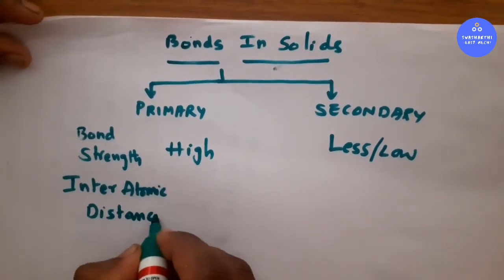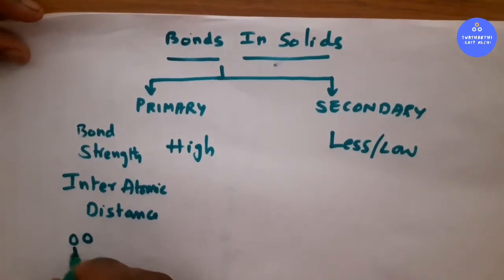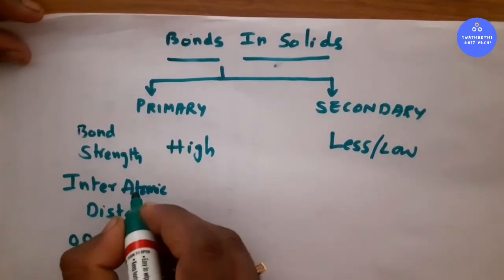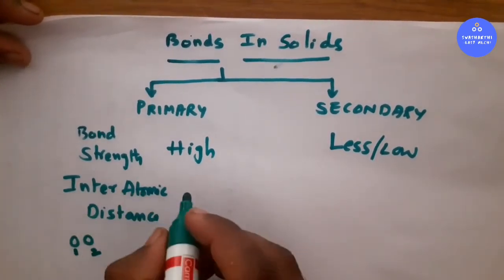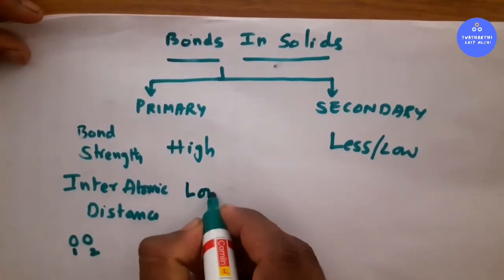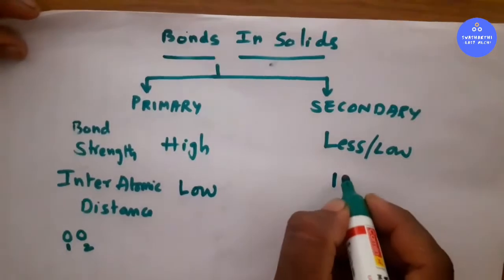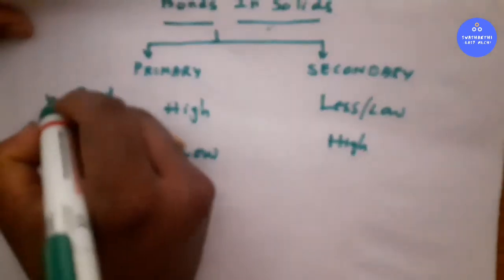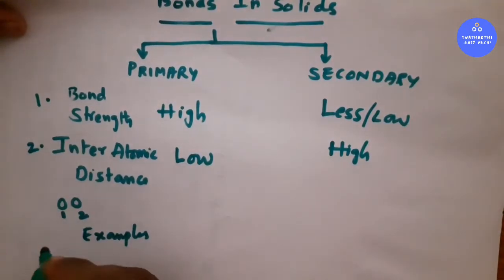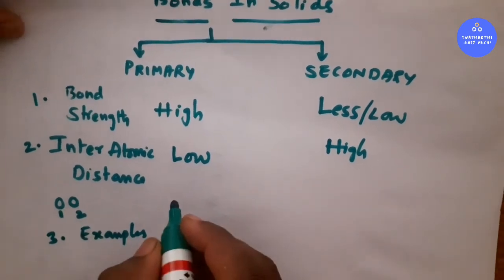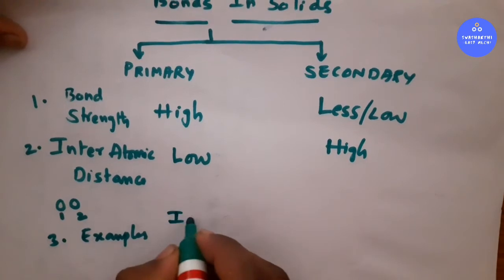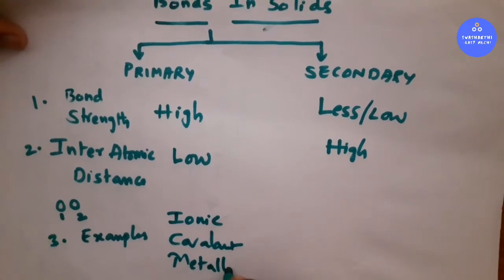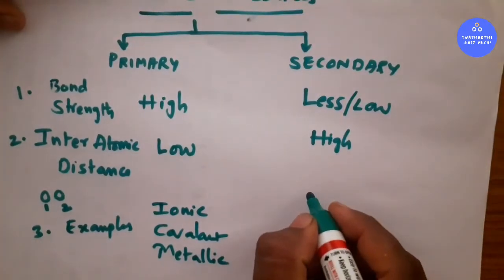The inter-atomic distance is the distance between atoms. In primary bonds, inter-atomic distance is low or less, whereas in secondary bonds it is high. Examples of primary bonds are ionic bond, covalent bond, and metallic bond. Examples of secondary bonds are van der Waals bond and hydrogen bond.